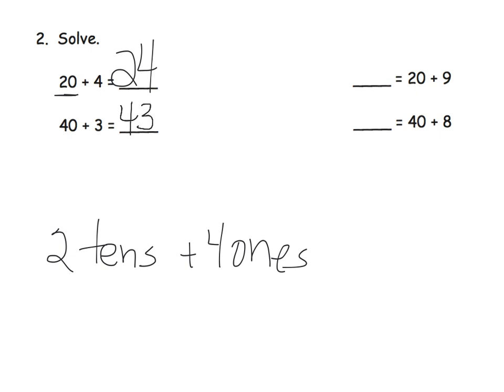40 plus 3, or 4 tens plus 3 ones. Now the purpose of these questions over here is to show that the answer, meaning the blank space, can be on the left side or it could be on the right side of the equation. It doesn't matter and we want students to be flexible with both. So 20 plus 9 is 29, 40 plus 8 is 48.